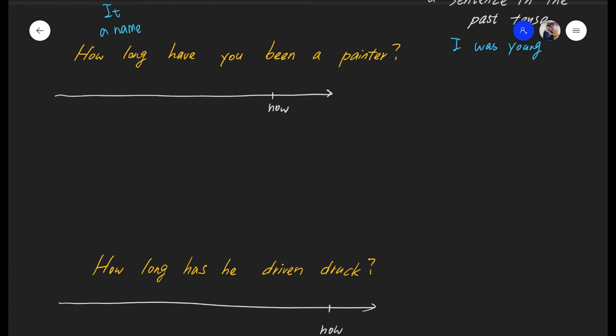Now, how long question, this particular question word is often used in the present perfect tense, because present perfect tense, especially the duration aspect, is all about knowing how long somebody has done something. So how long is a very common question word that we use in the present perfect tense, especially when talking about the duration of things.